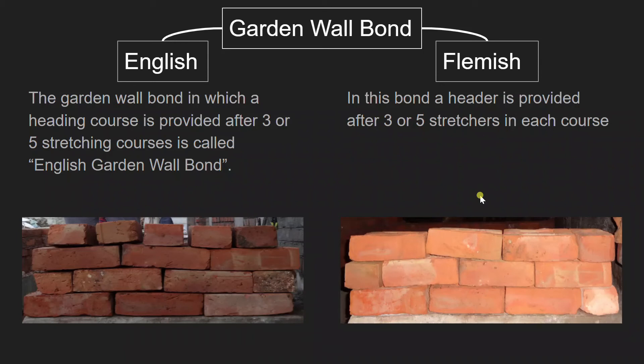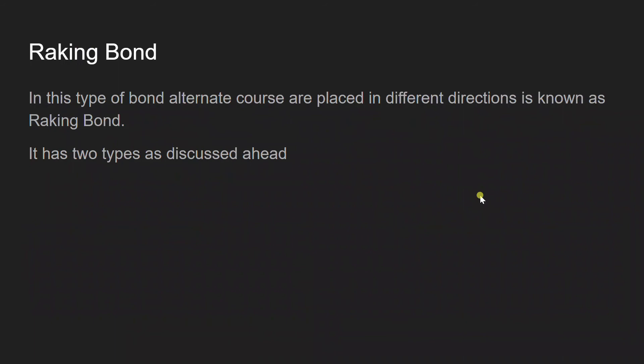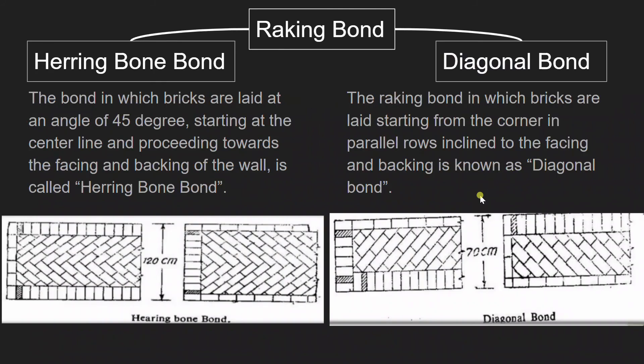Next we have raking bond. There are two types of raking bond. Raking bond basically means that in this type of bond, alternate courses are placed in different directions. The two types are herringbone bond and diagonal bond. In herringbone bond, bricks are laid at an angle of 45 degrees, starting at the center line and proceeding towards the facing and backing of the wall. Diagonal raking bond means a bond in which bricks are laid starting from the corner in parallel rows inclined to the facing and backing.